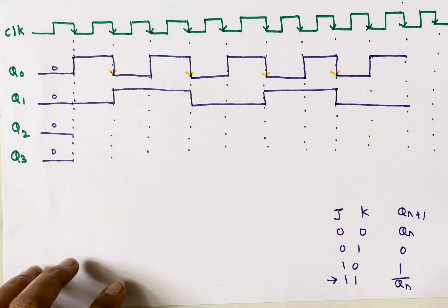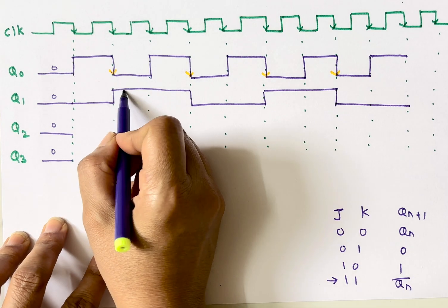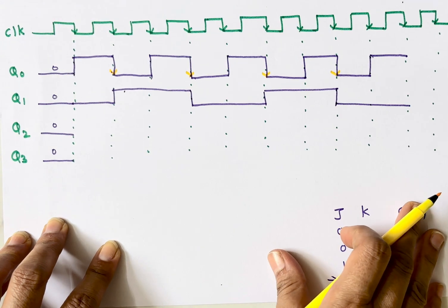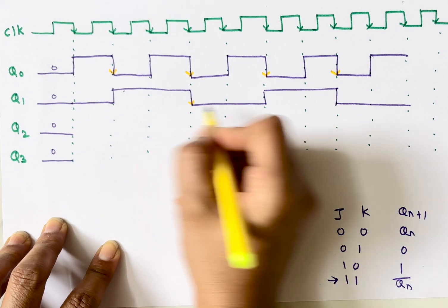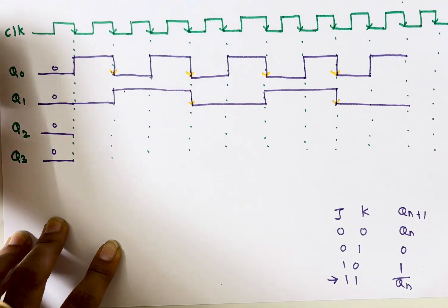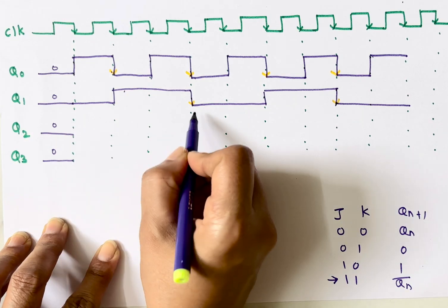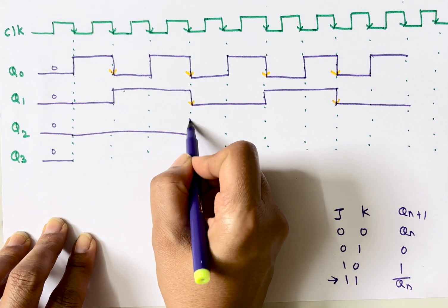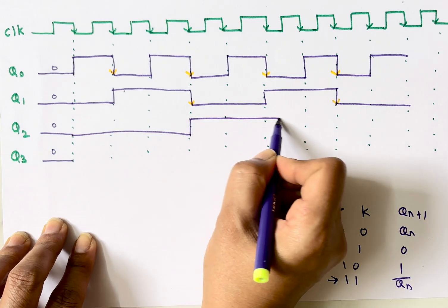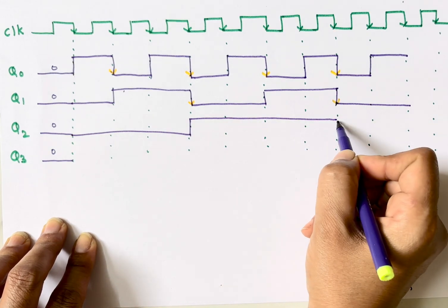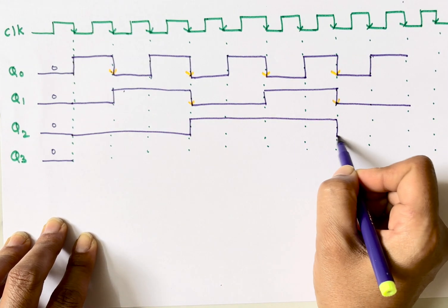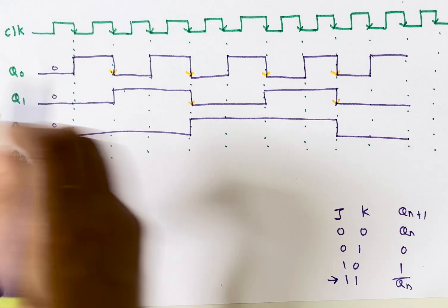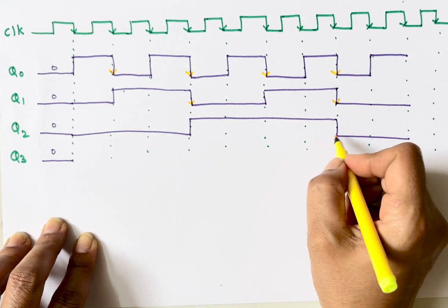Similarly for Q2, Q1 acts as the clock input. At the negative edges of Q1, Q2 will change. Up to the first negative edge of Q1, Q2 remains 0. Then it becomes 1 and stays 1 until the next negative edge of Q1, where it becomes 0 again.